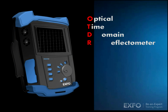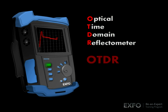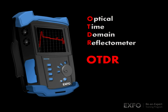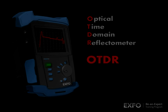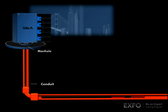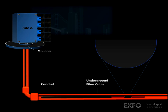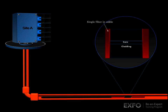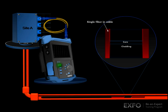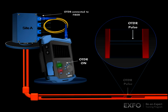Breaking down the name reveals that an OTDR conducts timed measurements of reflected light. The OTDR operates on a principle similar to radar: a pulsed laser signal is injected into the glass fiber, and the subsequent backscattered or reflected signal is timed and measured for both power and distance.